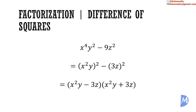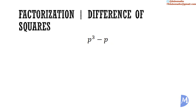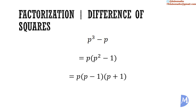Even more interesting though — factorize p cubed minus p. Factorizing by HCF: p multiplied by p squared minus 1. But p squared minus 1 is equal to p squared minus 1 squared — difference of squares. Thus, p multiplied by p squared minus 1 is equal to p, multiplied by p plus 1, multiplied by p minus 1.